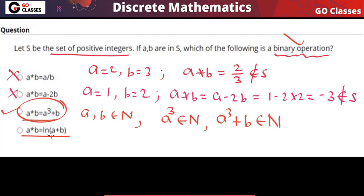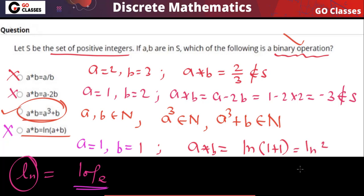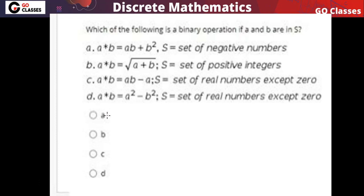What about a★b = ln(a) + b? This 'ln' is the natural log — logarithm base e. This is also not a binary operation. If you take a = 1, b = 1, then a★b = ln(1) + 1 = ln(2) ≈ 0.693, which is not an integer and does not belong to our set of positive integers. So closure property and binary operation are the same thing.